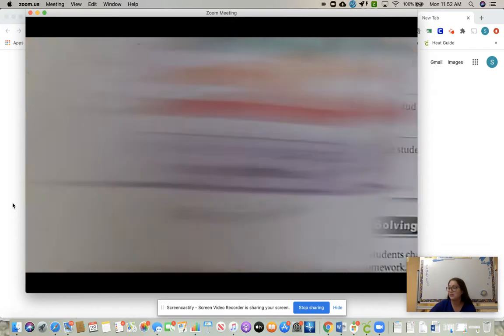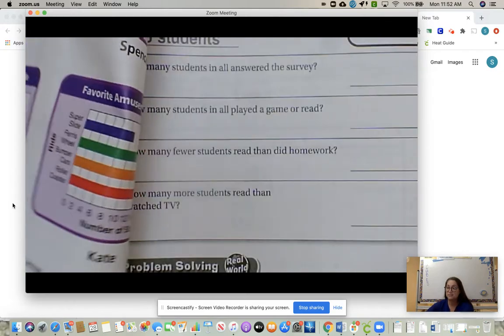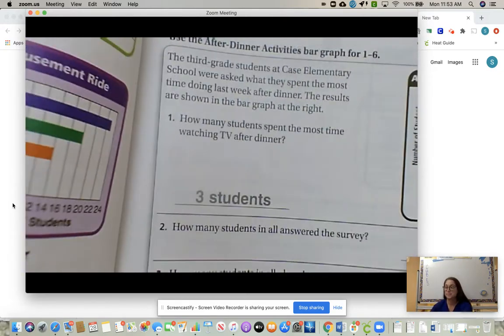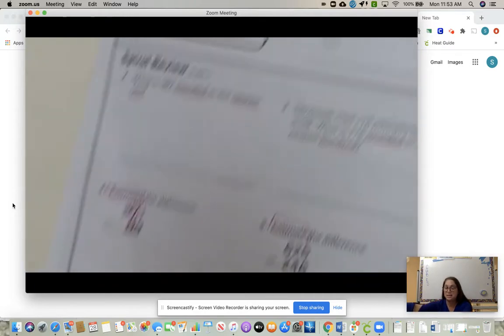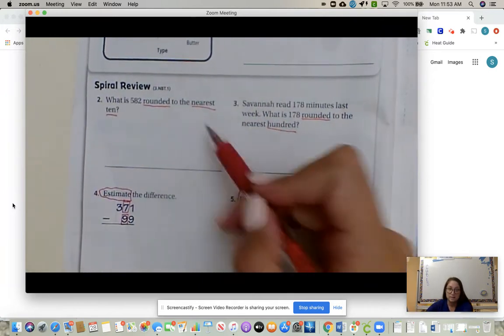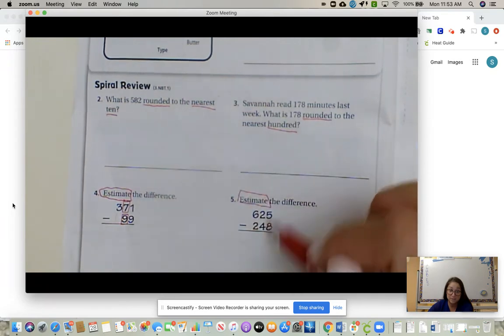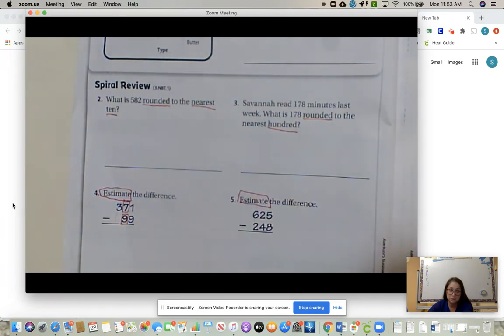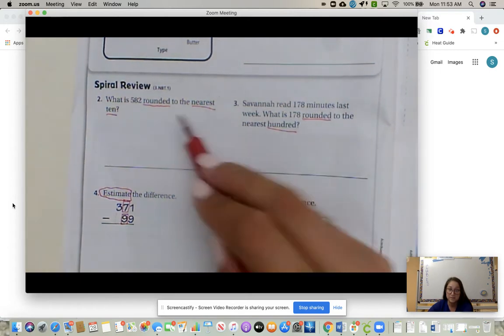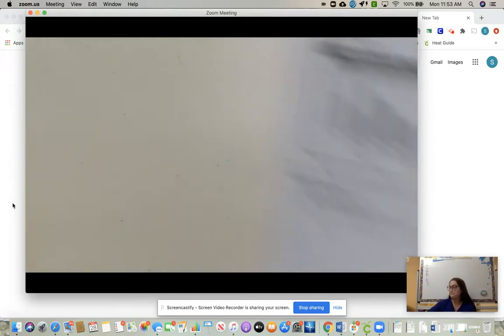Your homework is page 80A, all of it, and the back side, 80B, all of it. Okay, this is a review. We're rounding and then we're estimating, which is we're rounding, and then we're subtracting. You choose which place value you want to use if it's not specific. Two and three are specific, so make sure you're paying attention.